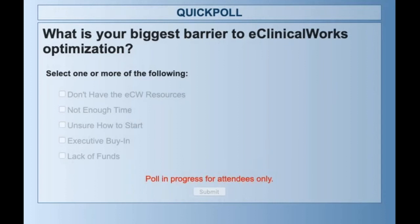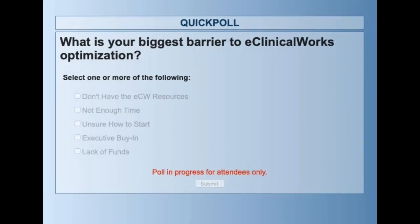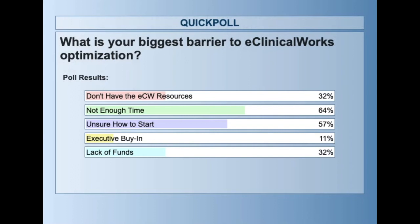The poll question is: what is your biggest barrier to eClinicalWorks optimization? You can select more than one, as we know these can all exist at the same time. The results are coming in — it looks like the biggest barrier most of you answered is having a lack of time. The second most common answer is being unsure how to start. This is really great feedback and will be useful for today's presentation.